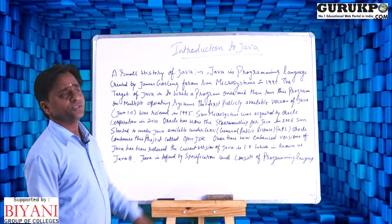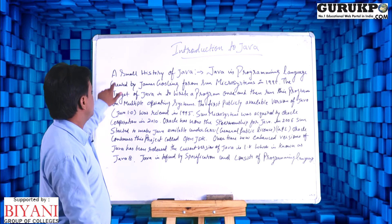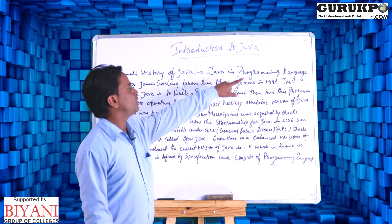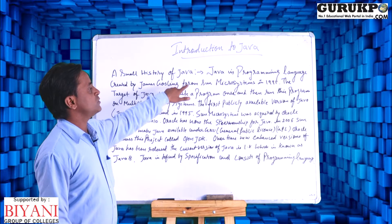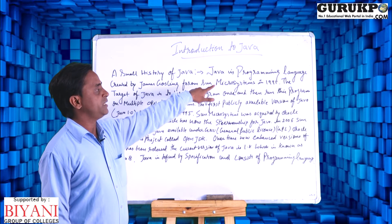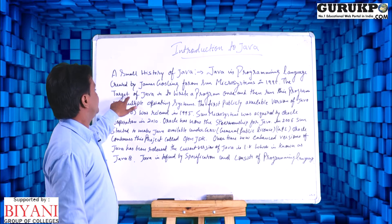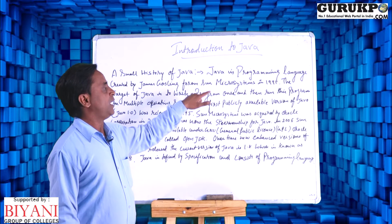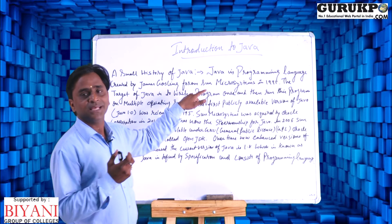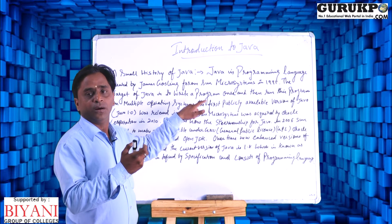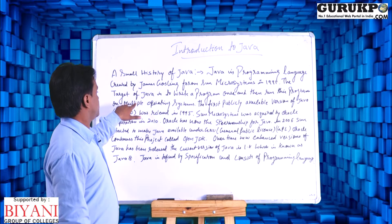A small history of Java: Java is a programming language created by James Gosling from Sun Microsystems in 1991. The target of Java is to write a program once and run it on multiple operating systems.